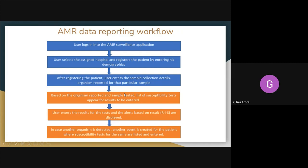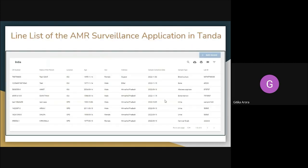Based on the pathogen and sample type — for example, if E. coli is detected in a urine sample — the system automatically shows the list of tests that need to be reported. For E. coli, only 10 specific antibiotics need to be tested, so only those 10 are shown. The lab user enters the results, the resistance pattern is calculated, and additional organisms can be entered if detected.